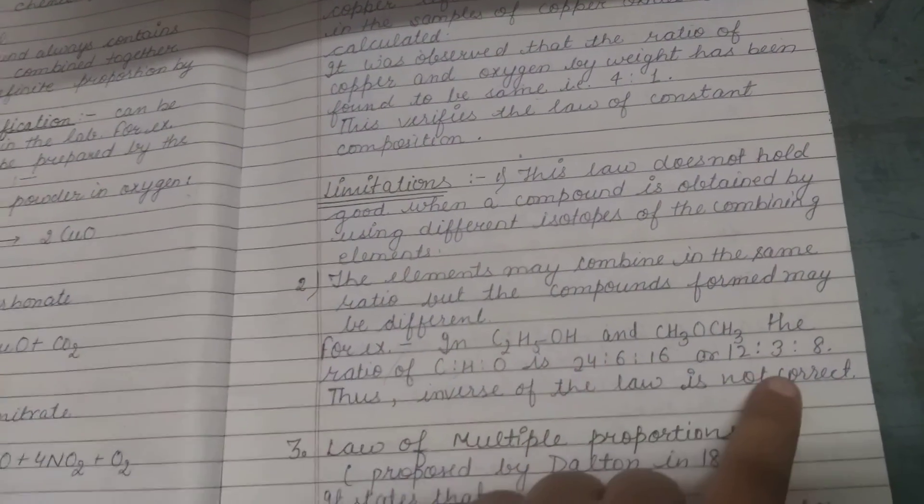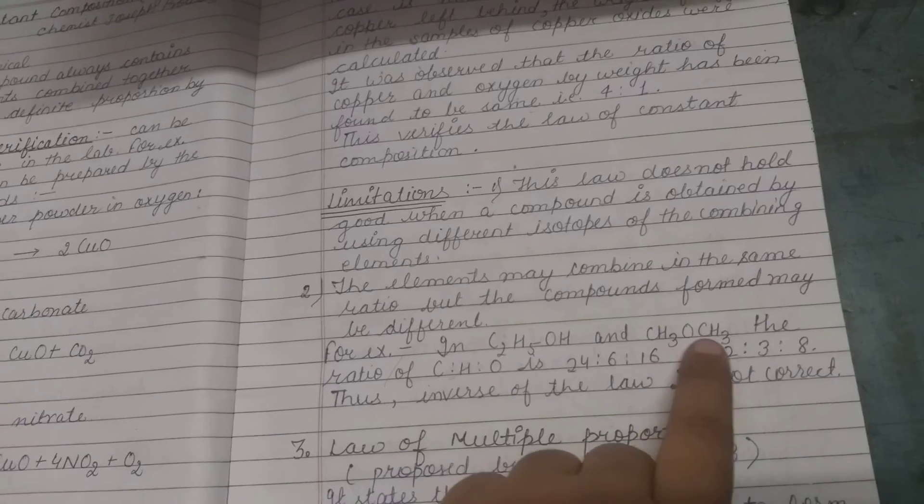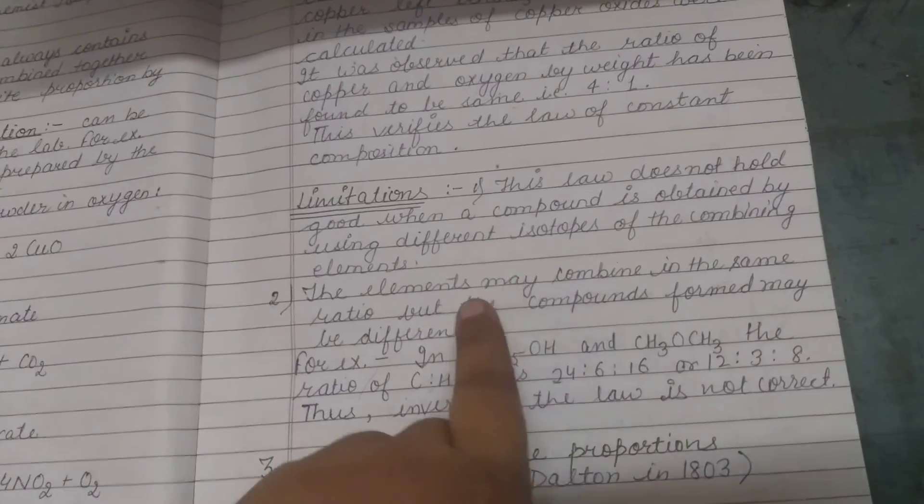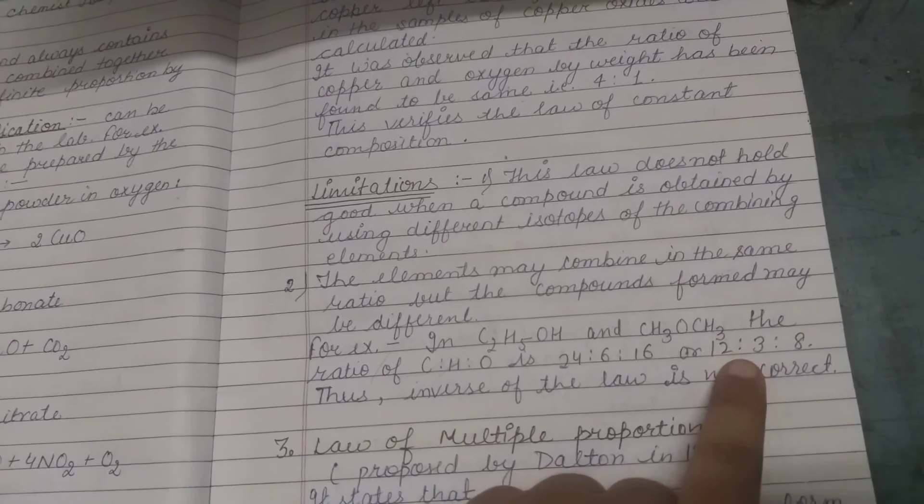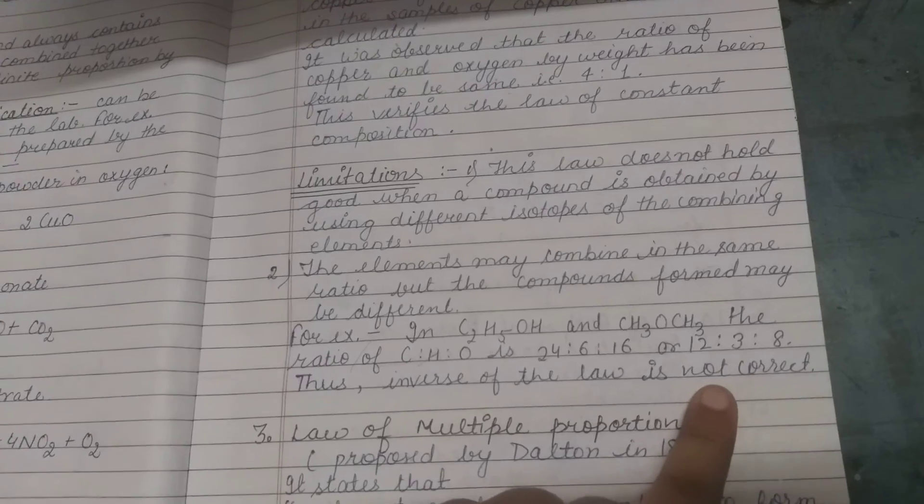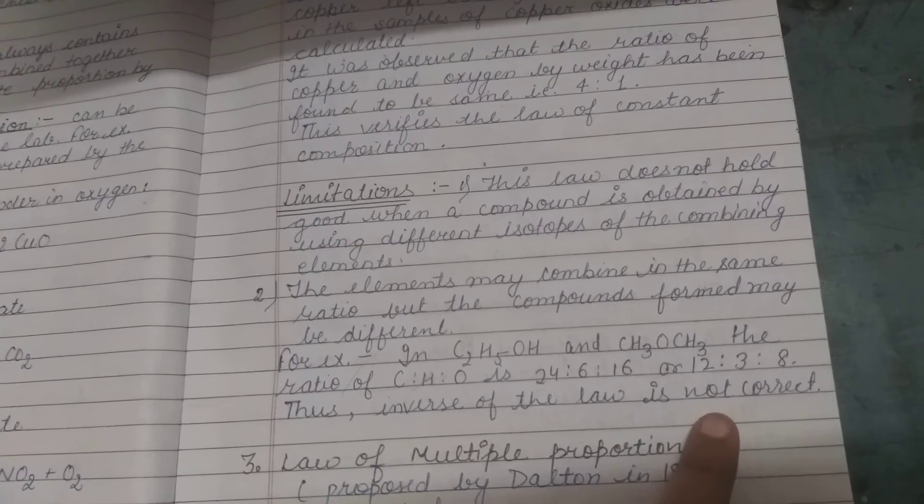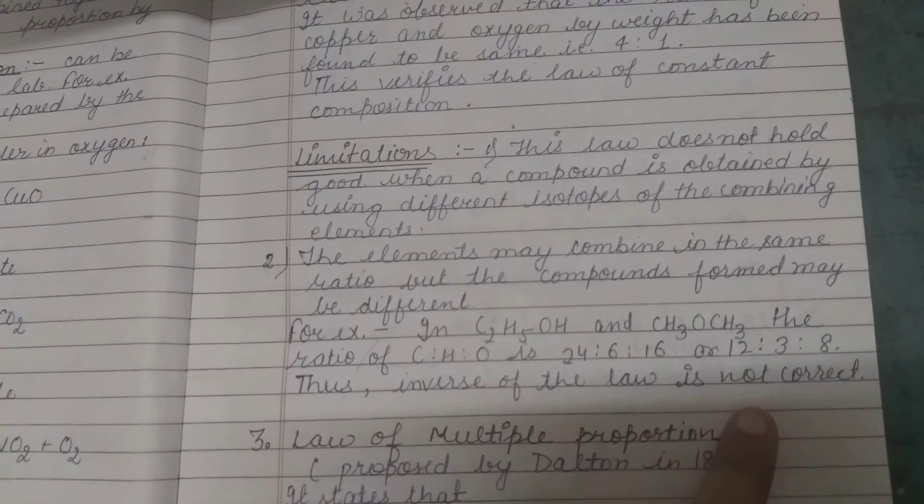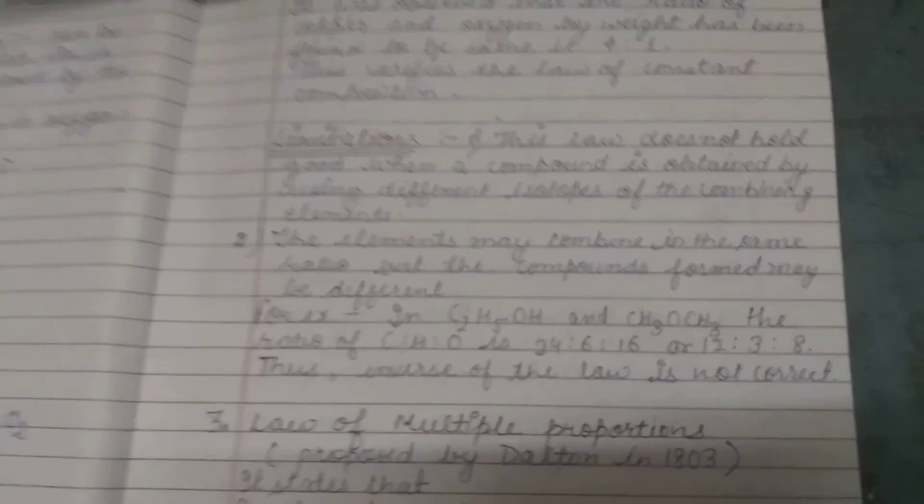This is alcohol and this is ether. The properties are different, but the ratio is the same. This means the inverse is not correct. You can have the same ratio but different compounds, so the ratio alone doesn't determine the compound.